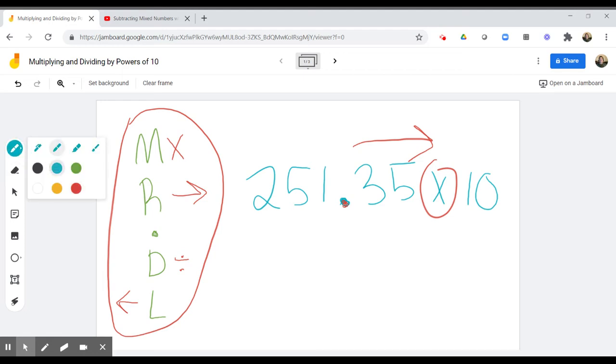Now how many places? Well, if you color in the 0 here in 10, it reminds you that 10 is 1 power of 10. And the number of powers of 10 you're either multiplying or dividing by tells you how many places you're going to move the decimal. So in this example, we are going to move the decimal to the right one place because I'm multiplying by 1 power of 10.